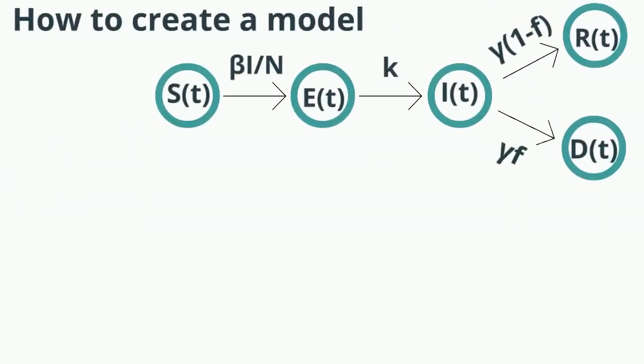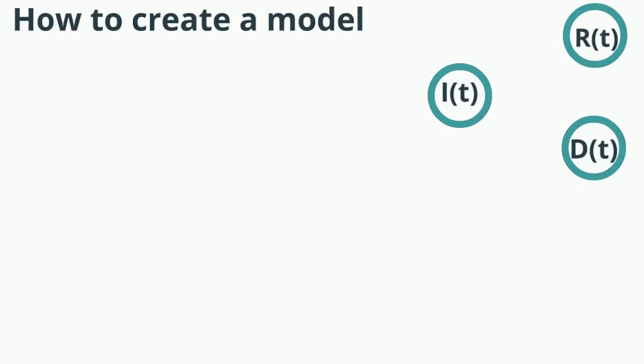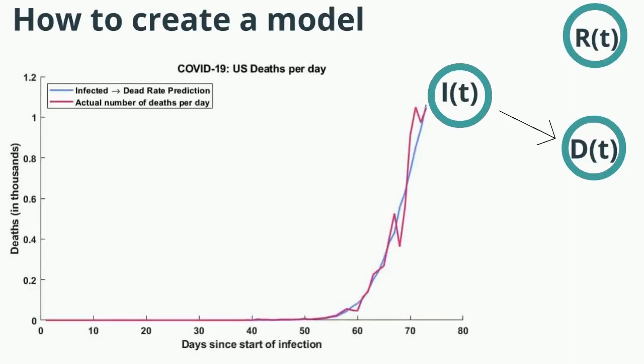Now that we've covered our dynamics and estimated the variables, we can model the outbreak and compare our prediction to the measured data. For example, using the infected state, we can estimate the death rate. The measured data here is shown in purple and the estimated state is shown in blue. But this is just the first step to validating our model.